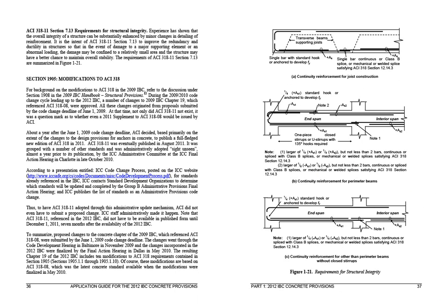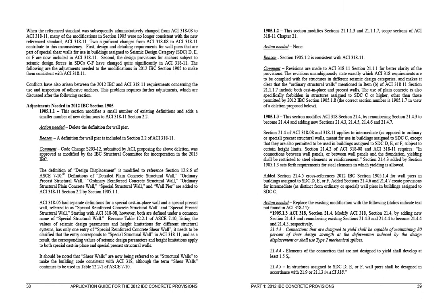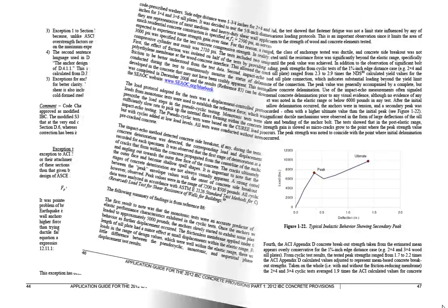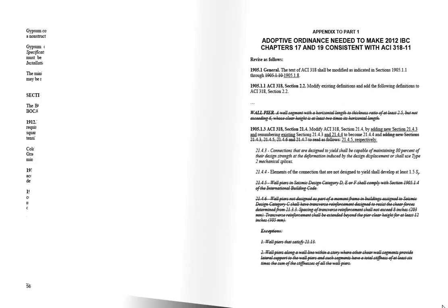An in-depth discussion on Section 1905 of the code is probably one of the most beneficial segments of the book, which addresses a problem that code users — including building officials, plan reviewers, architects, and engineers — absolutely need to be aware of. The concrete chapter of the 2012 IBC referencing ACI 318-11 was finalized long before the reference standard was changed from ACI 318-08 to ACI 318-11. This book comprehensively explains the adjustments required to make Section 1905 of the 2012 IBC consistent with the reference standard ACI 318-11.